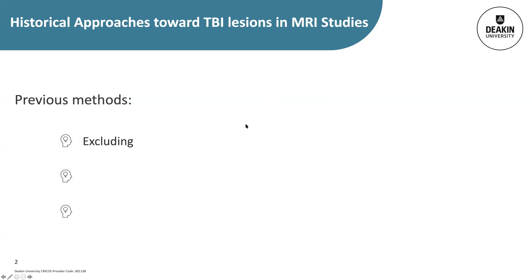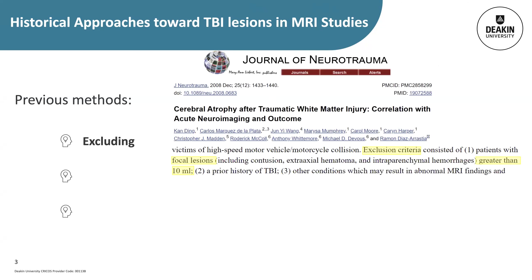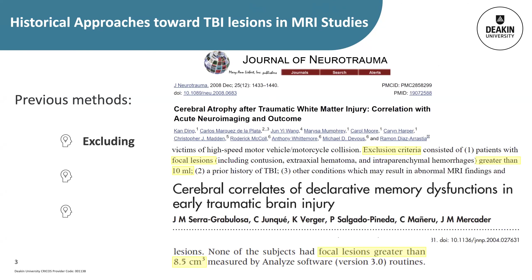To understand why we need to improve our methods of dealing with TBI lesions in MRI image pre-processing, we first need to know what has been done previously. Generally speaking, previous studies have done one of three things when it comes to patients with focal lesions: they have either excluded them, ignored them, or tried to deal with them. Studies that excluded patients generally chose a lesion-size threshold, but these thresholds were not always consistent between studies. Exclusion reduces statistical power by reducing sample size and limits generalizability by restricting samples to only a subset of the clinical TBI population.